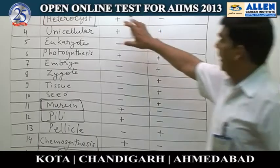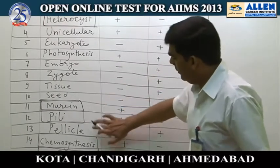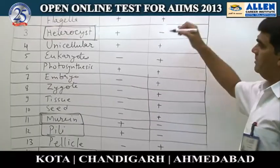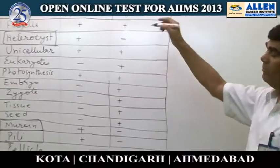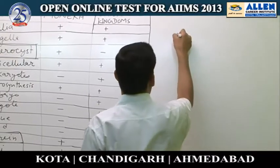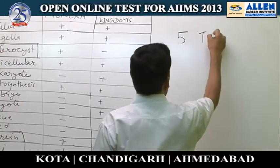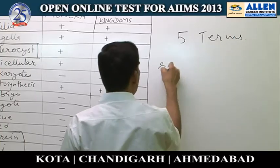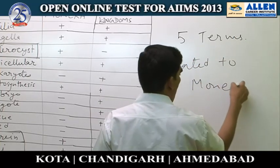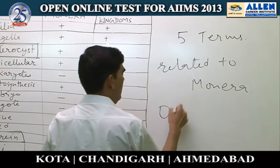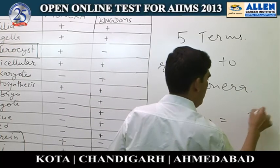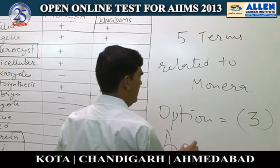Looking at all 15 terms, how many characters are present in Monera only and only? Counting them up: one, two, three, four, five terms appear to be related to Monera only. However, the correct answer is three.